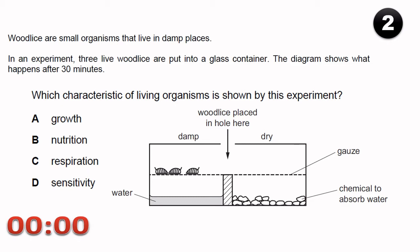Woodlice are small organisms that live in damp places. In an experiment, three live woodlice are put into a glass container. The diagram shows what happens at 30 minutes. Which characteristics of living organisms are shown by this experiment? Sensitivity.